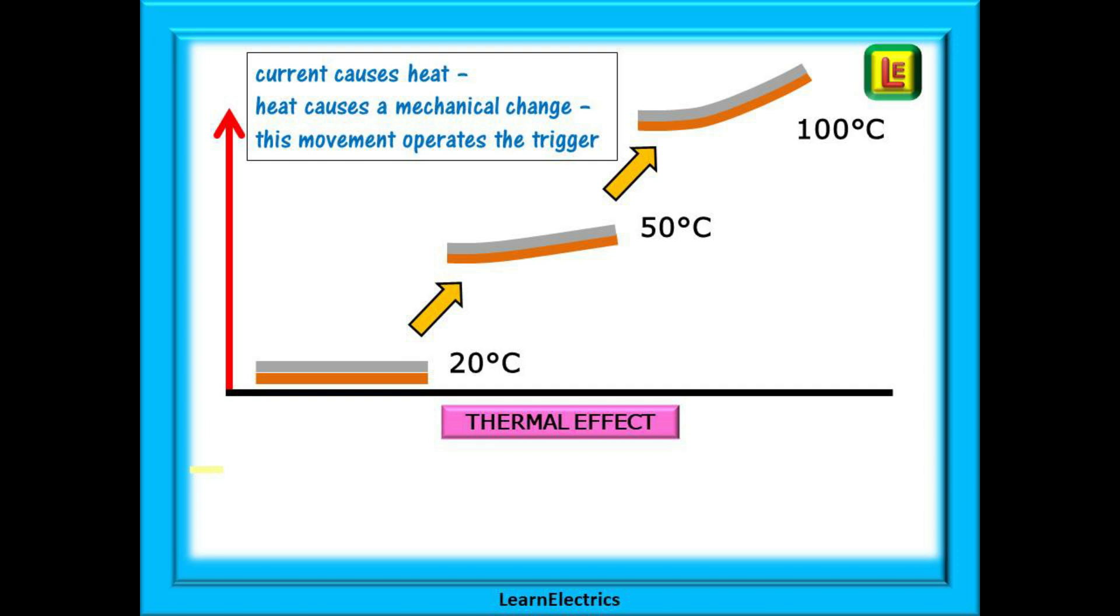The excess current causes heat to build up in the bimetallic strip and this heat causes a mechanical change, a movement in the strip. It is this mechanical movement that operates the trigger mechanism inside the MCB.